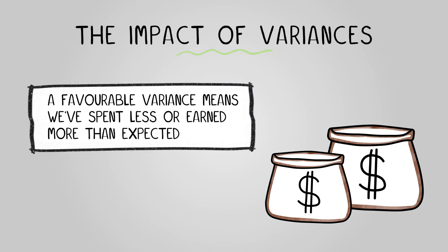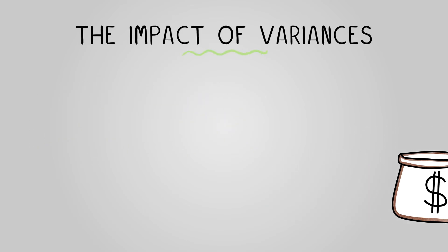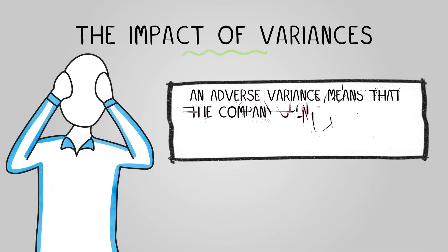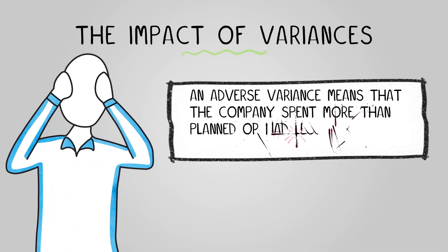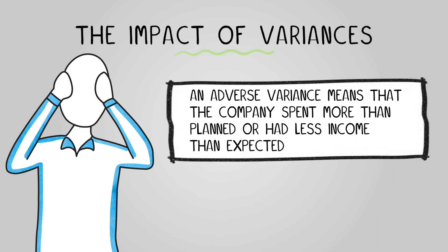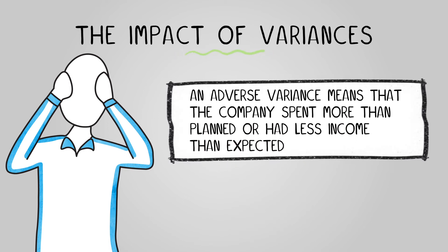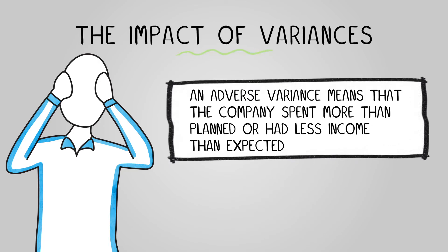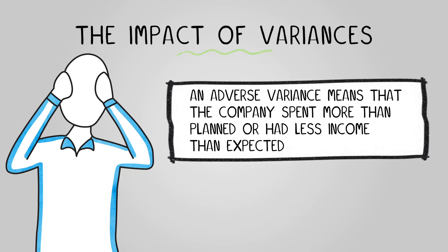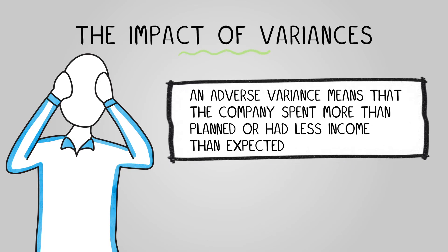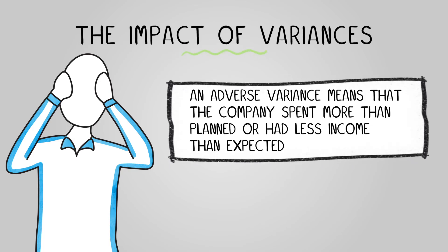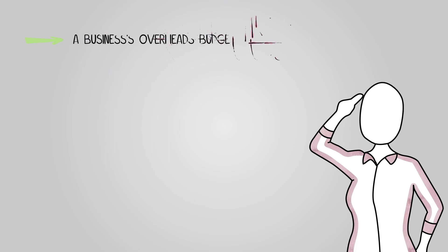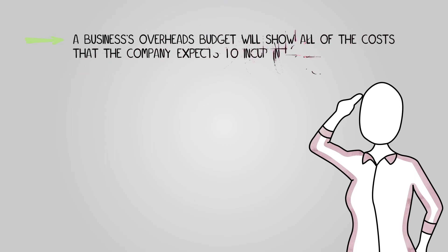An adverse or unfavorable variance means that the company spent more than planned or had less income than expected. This can have a considerable impact on the business, as adverse variances negatively affect profits. We may therefore need to put in corrective measures in response.